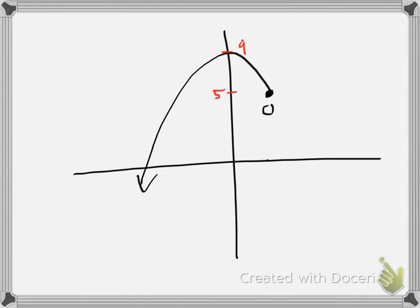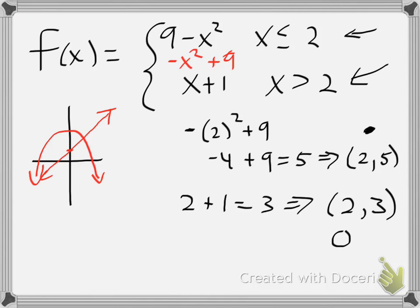My second graph starts at (2, 3). It's a straight line with a slope of 1, or 1 over 1 — so 1 to the right, 1 up. And my graph looks like this. This is my final answer — the graph of the piecewise function: 9 minus x squared when x is less than or equal to 2, and x plus 1 when x is greater than 2.